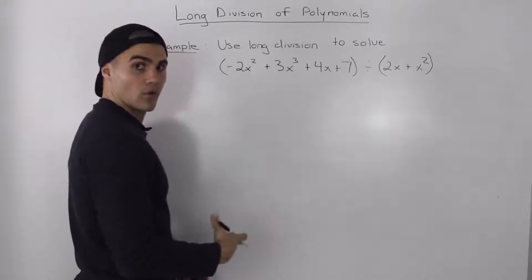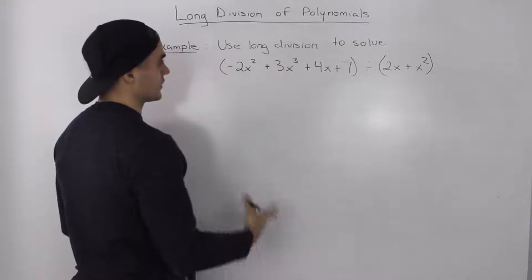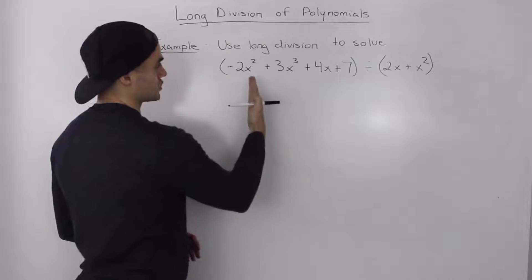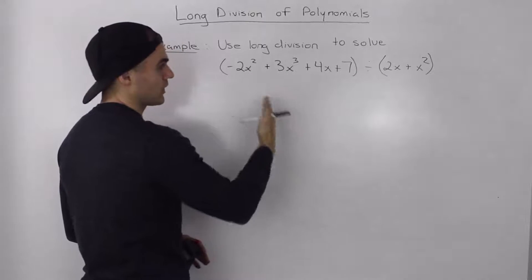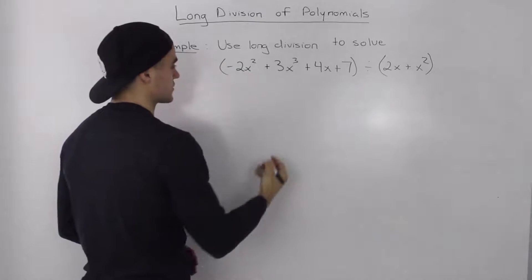Now again, what is the first step always when you're dividing polynomials? Make sure that the dividend and the divisor are arranged in a way where it's highest degree to lowest degree.